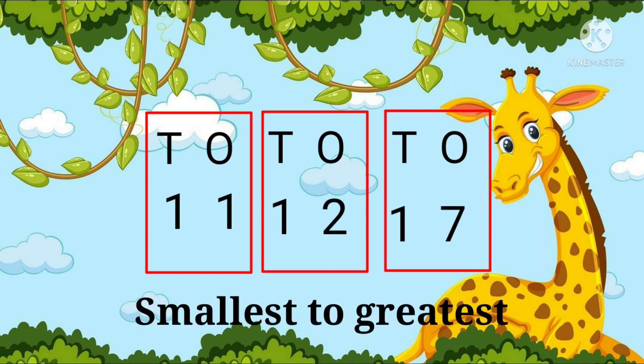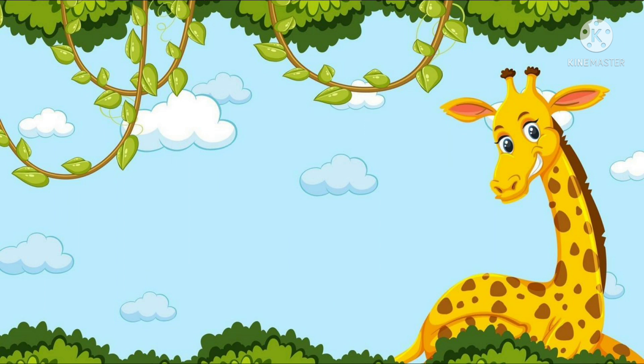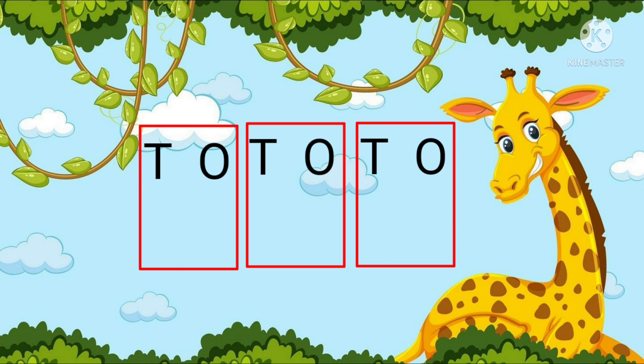If we arrange these numbers in ascending order, it will be 11, 12, and 17. We have arranged them from smaller to greater in increasing order. Let's see another example: 2, 19, and 16. Going by the first rule, we can see that we have one single digit number, 2. Automatically we come to know that 2 is smaller.